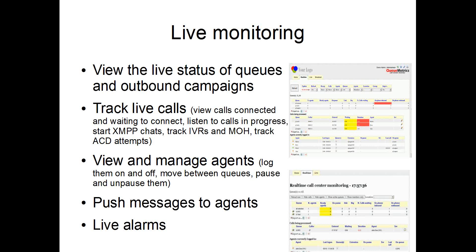You can manage your current set of agents: log agents on and off, pause and unpause them, change their status codes, and move people between queues to balance the workload. You can push messages to agents so they know what's going on, targeting agents by criteria like the queues they're working on or the agent group they belong to. The real-time monitoring also provides live alarms — you'll see cells colored yellow or red, all configurable, so you can see at a glance if anything unusual is happening in your call center.